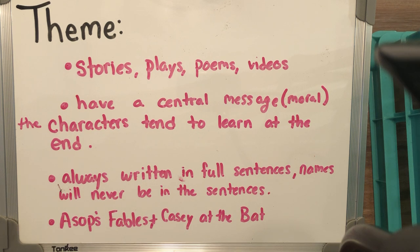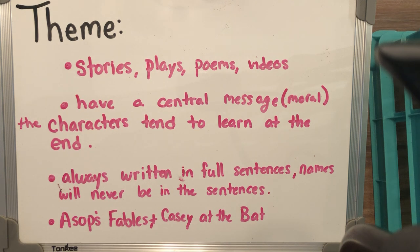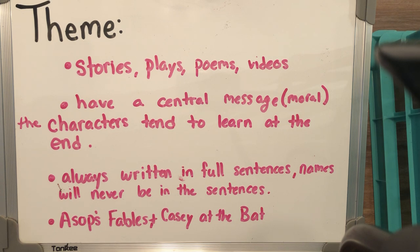Theme is always written in full sentences, and the names of the characters will never be present in those sentences. For example, if the theme of a story is about jealousy, we can write it saying the theme of the story is how not to be jealous and why jealousy is such a bad thing. No characters' names are brought up and there's no explanation or evidence. It simply states that jealousy can really get us into some trouble, or that jealousy is not always a good thing.